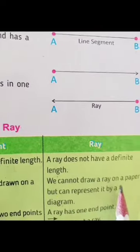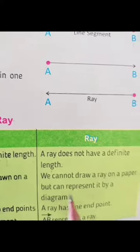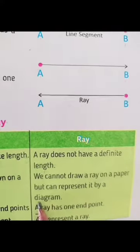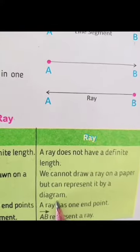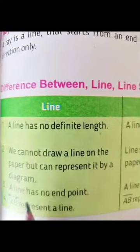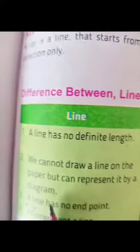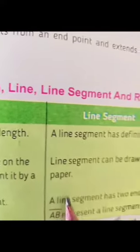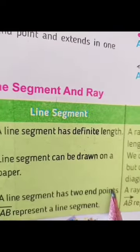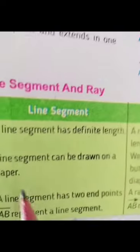We cannot draw a ray on paper, but we can represent it by a diagram. A line has no end point and does not change in length. A line segment has two points: one is the initial point and one is the end point.